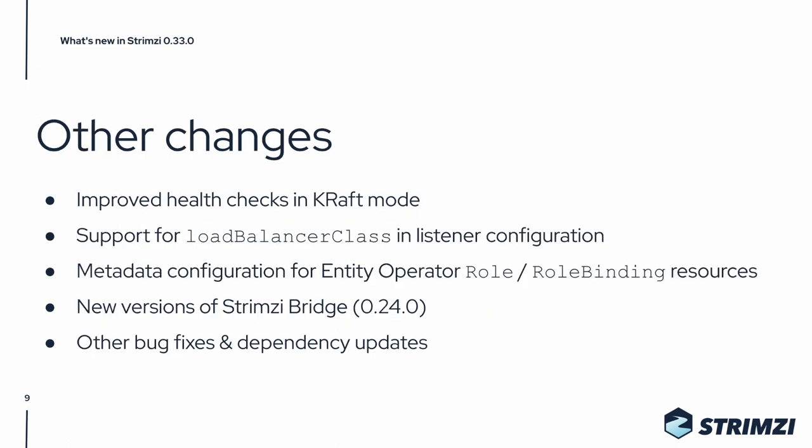There are also many smaller changes, such as improved health checks in the Kraft mode, support for load balancer class in listener configuration, metadata configuration for entity operator role and role binding resources, and a new improved version of the Strimzi bridge. There are of course also many other bug fixes and dependency updates. For a full list of changes, please check out the GitHub release page.